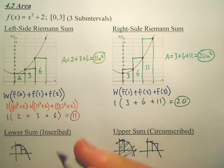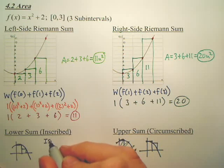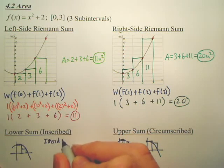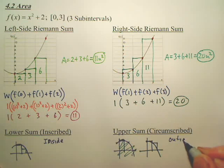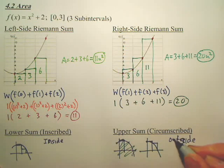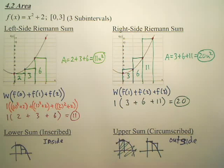So lower are inscribed or inside, can't spell, and these are outside. Inside and outside the graph. We'll see you then on the next video.